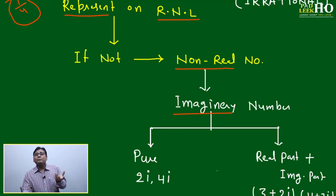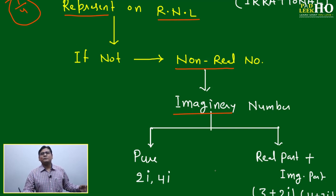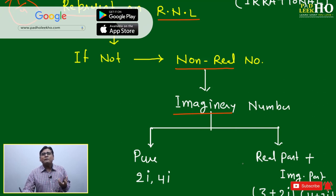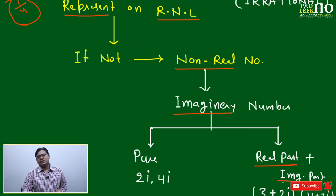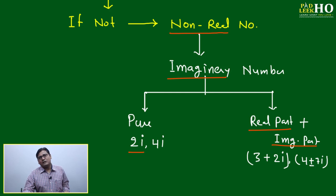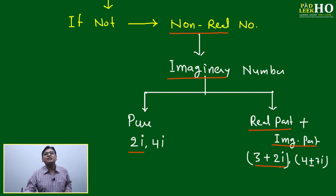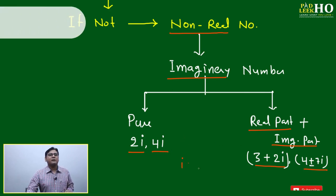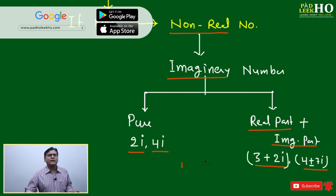Two things only: either real or imaginary. Whatever we are seeing is reality; whatever is in films can be so imaginary. Same way, if things are not real they are imaginary. If imaginary, two possibilities: either pure imaginary, or real part plus imaginary part. Similarly, a film can be based on total imagination — pure imagination — or inspired from real incidents, giving real part plus imaginary part. So imaginary numbers can be two types: pure imaginary and mixed imaginary with a real part.